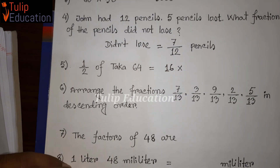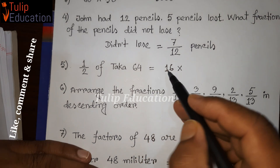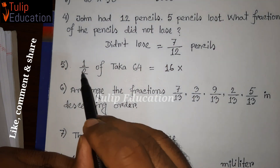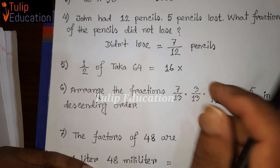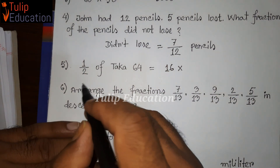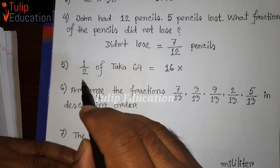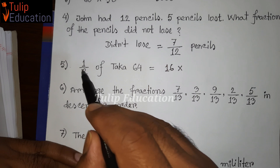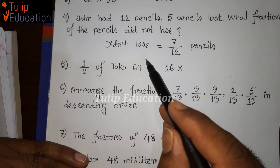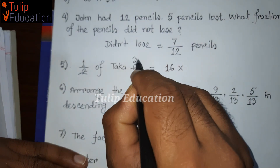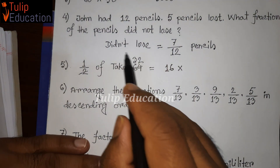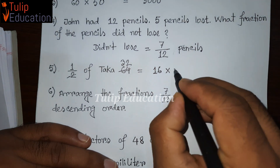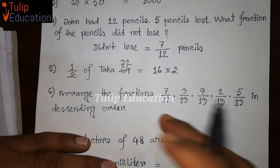Question number 5: Half of taka 64 equals a candidate that is 16 multiplied by a number. We need to balance the left side and right side. Half means one by two, so we divide 64 by 2. The numerator is 64 and we will get the answer, which is 2 — that is the ultimate result.